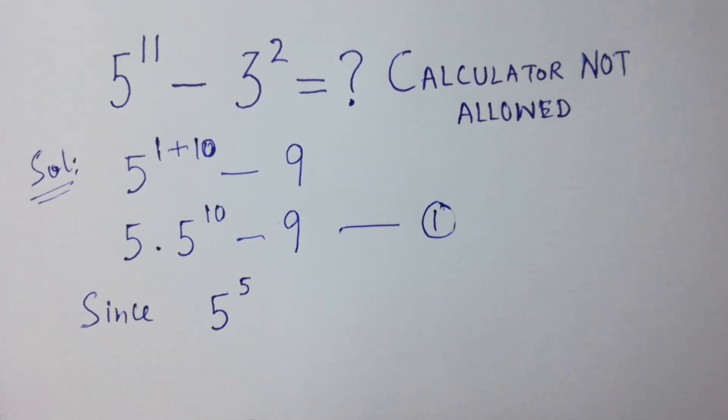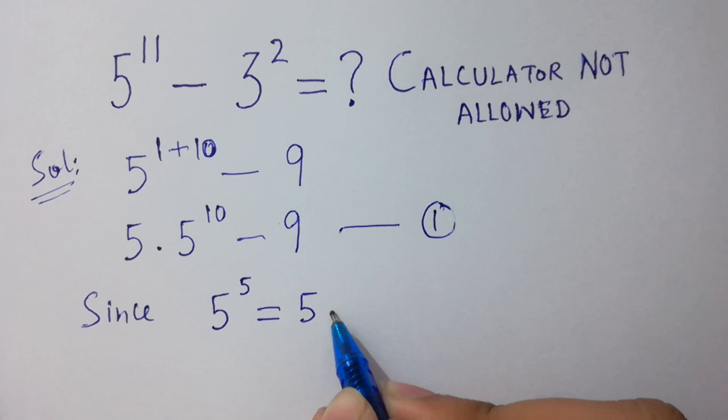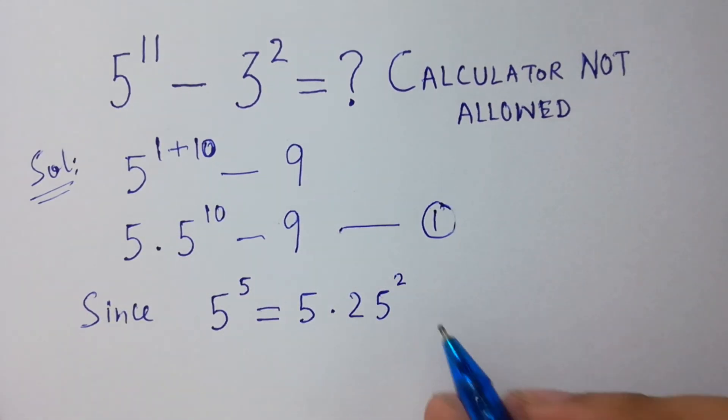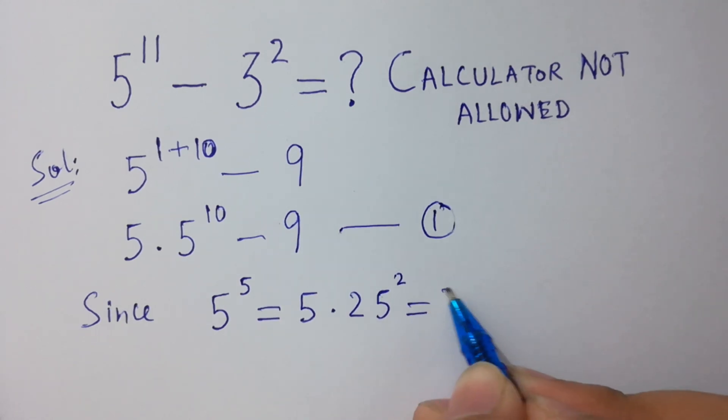5 to the power 5 equals 5 times 25 squared, and 5 times 25 squared equals 625, and 5 times 625 equals 3125.